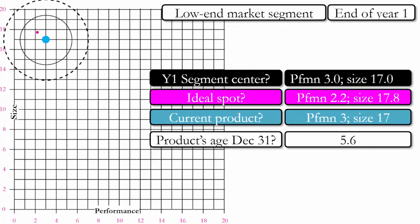At the end of year one, our product is still positioned ahead of the ideal spot and is right on top of the segment center. If we were to do a revision now, we would cut the age in half from 5.6 to 2.8. Since 2.8 is still quite far from the ideal age of seven, and age is so important to this market segment, it would be better not to touch the product this year. Also, moving the product closer to the ideal spot still means making a larger and slower product, which again doesn't seem like a smart decision.